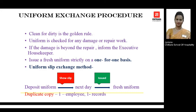So if a staff member deposits a soiled shirt, they will only receive a fresh shirt in exchange — not a complete set of shirt and trousers, as only a soiled shirt was deposited. This golden rule states: one soiled item for one fresh clean part of the uniform. The uniform attendant must also make sure that the uniform being handed out is spick and span and is not damaged or in need of repair work.